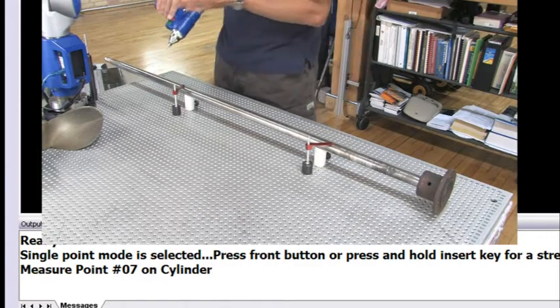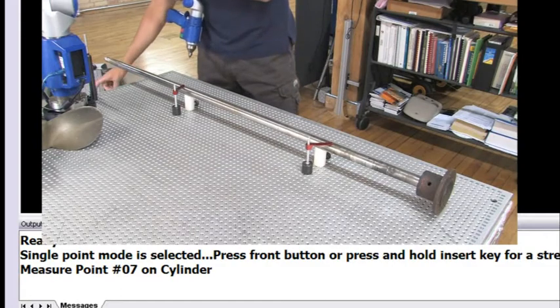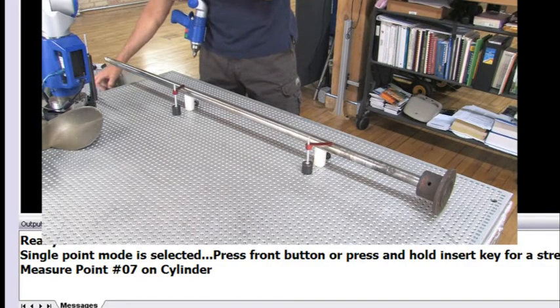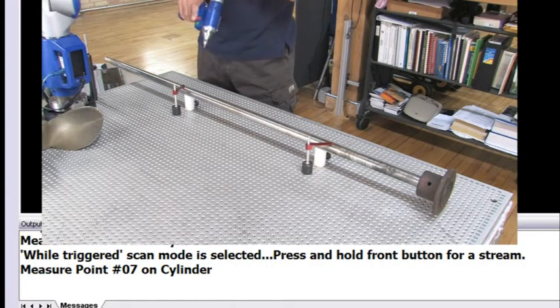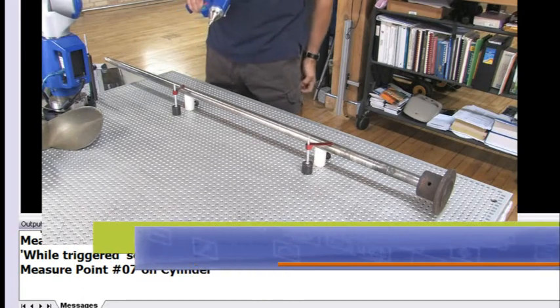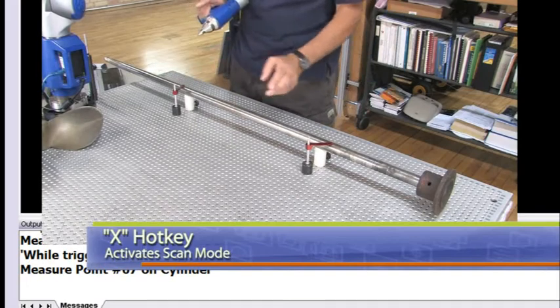Now I've got front end and back end tracked with three points each. Then I'm going to go back into my FCE file here and I'm going to hit the X key. Notice the bottom left hand corner when I hit the X key, it says while triggered the scan mode is selected. So now I'm in scan mode.